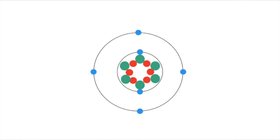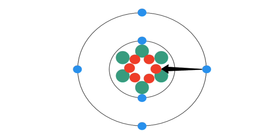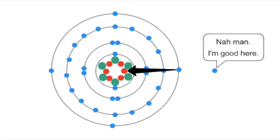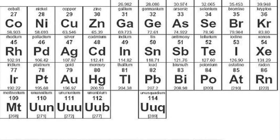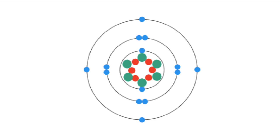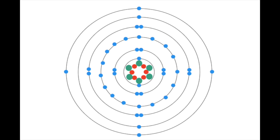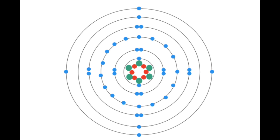Well, electrons are held in the atoms because they are attracted to the protons. If they are further from the protons, other electrons don't really want to come in. And the valence electrons of elements further down in the periodic table are farther from the protons. Atoms won't bond as well with silicon, germanium, tin, and lead as carbon for these reasons.